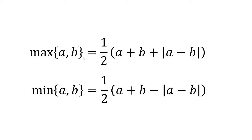In this video, we want to prove that the maximum of a and b is equal to one-half times the quantity a plus b plus the absolute value of a minus b. And the minimum of a and b is equal to one-half times the quantity a plus b minus the absolute value of a minus b.